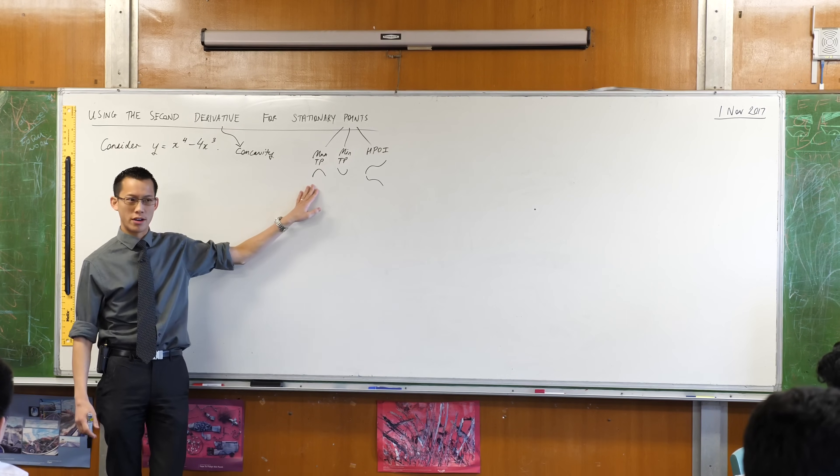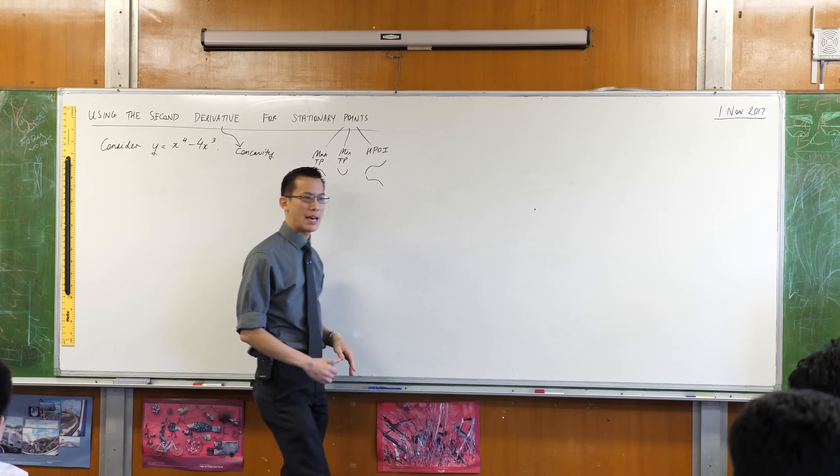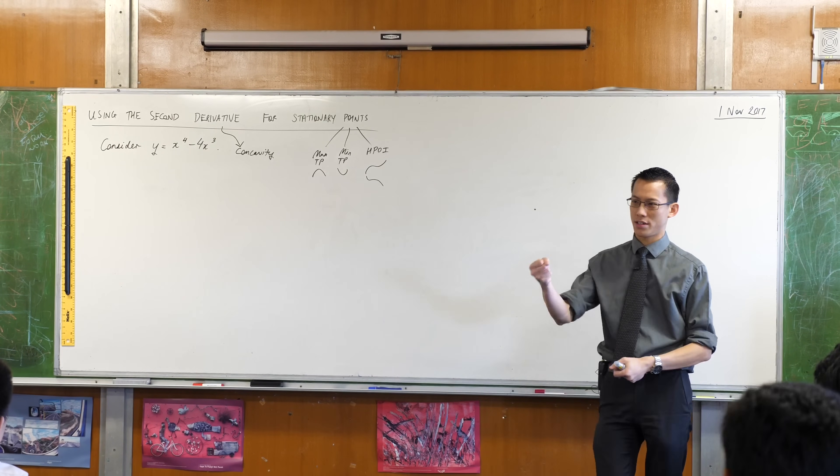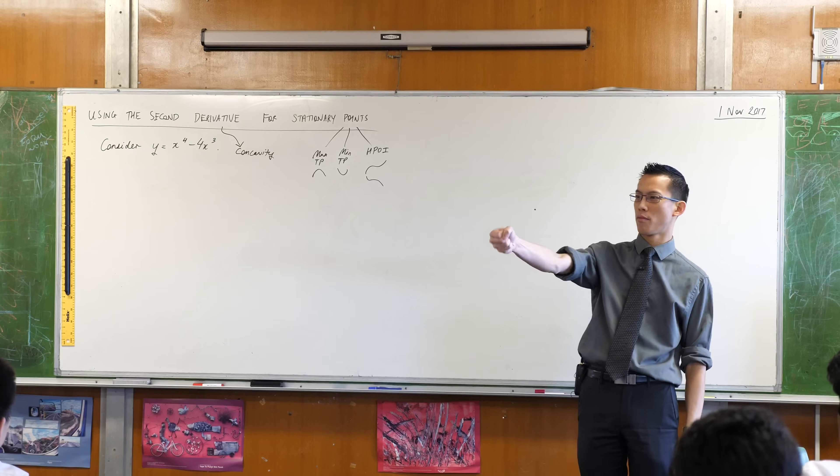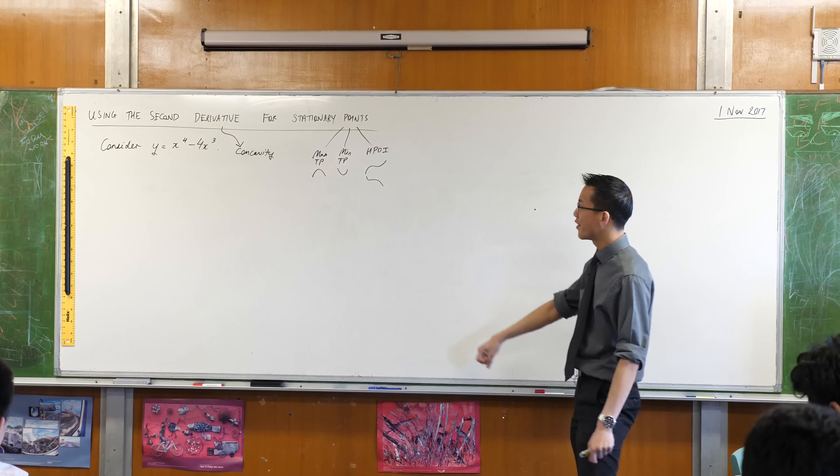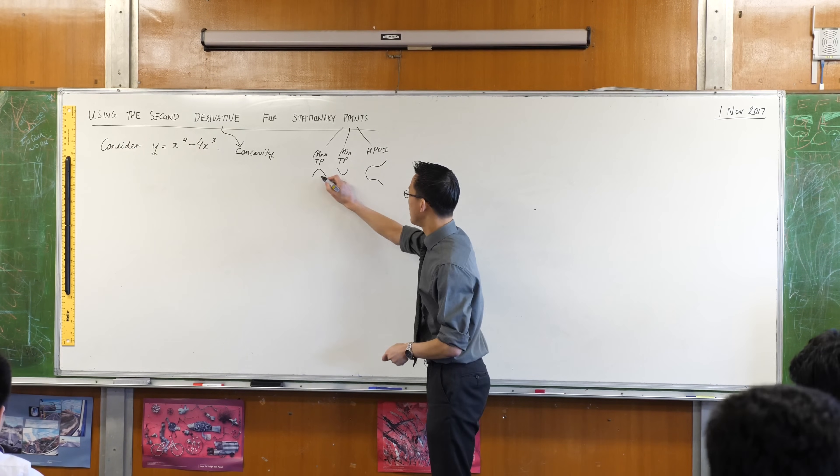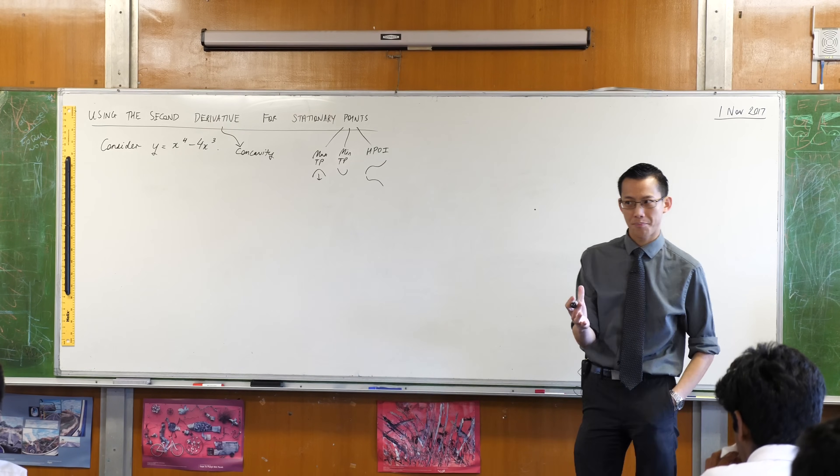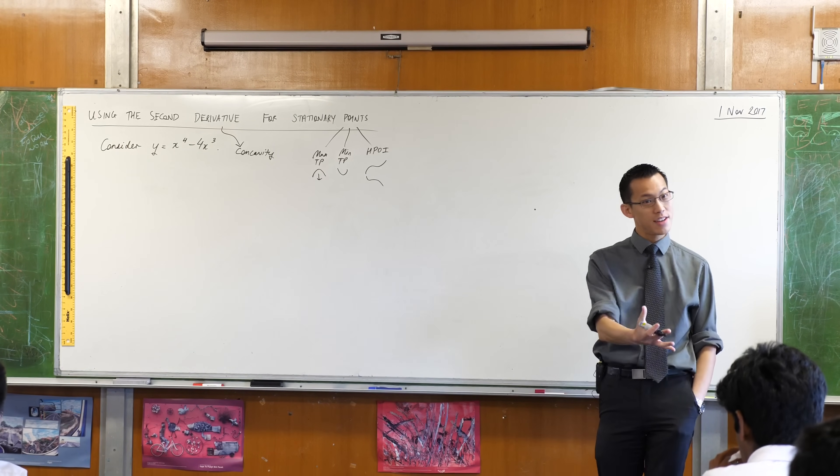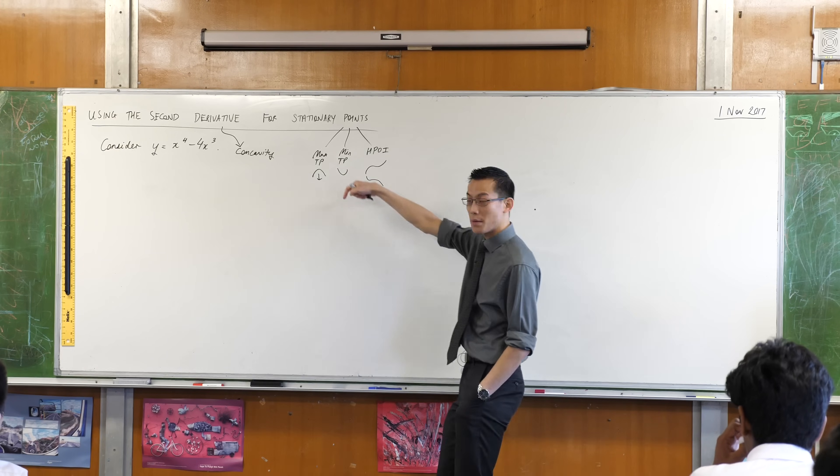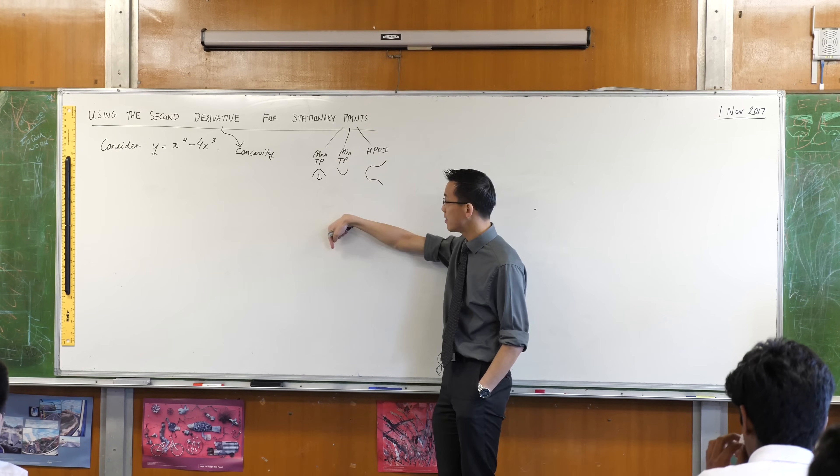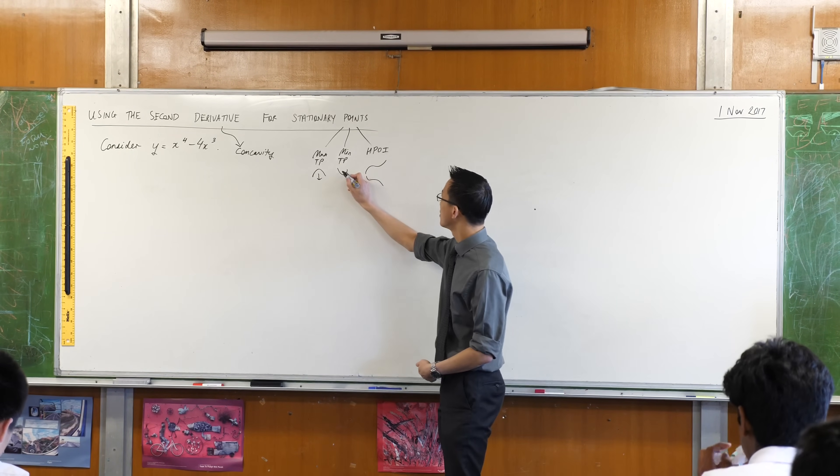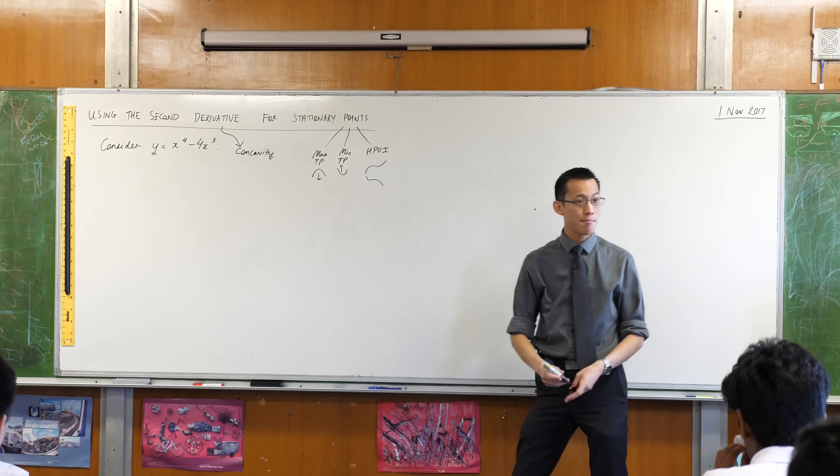If we get a max turning point, which direction is the concavity of the curve? Which way is it facing? It's facing down. Remember, I always like to picture a cup like, you're holding a cup upright, or you're holding it down. So this is concave down, which would mean that the second derivative is what? It'll be less than zero, it'll be negative. So negative means down, concave down means maximum. Likewise, if you're concave up, you have a minimum.